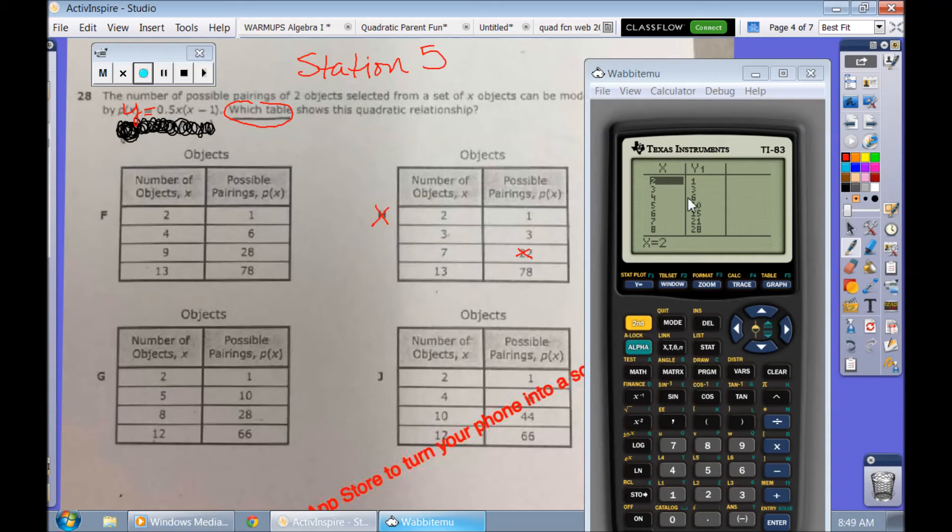How about 4-6 for letter F? Yes, I see 4-6. But how about 9-28? Do I have 9-28? No, that's 8-28. So that's not going to work. All right. Let's look at this one here. 8-28 works. Do I have 5-10? Yes, 5-10 works. Do I have 2-1? Yes, 2-1 works. Let's see if I have 12-66. And 12-66 works. And so that's all you had to do on that one. You're just matching up the table.